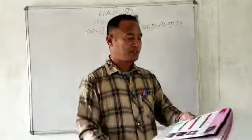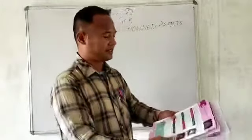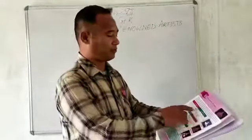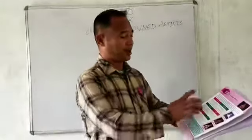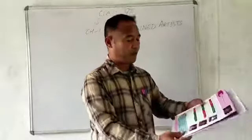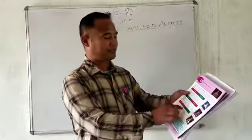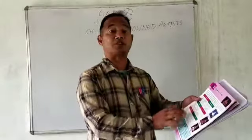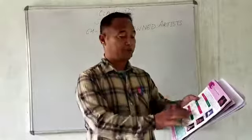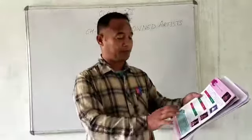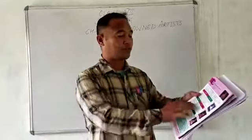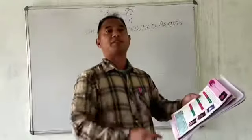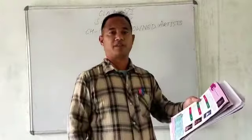So students, we have done numbers 1, 2, and 3. Now numbers 4, 5, and 6 are the names of musical instruments. We have to write the names of the persons who played these musical instruments.